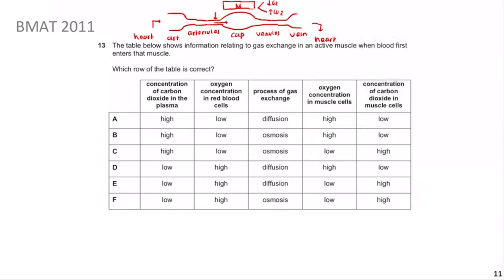To correct my earlier note: carbon dioxide concentration in the plasma should be low since it's fresh blood with CO2 already removed at the lungs. Oxygen concentration in red blood cells is high. The process of gas exchange is diffusion - not osmosis, which is specifically for water. Oxygen concentration in muscle cells is low due to high activity, and carbon dioxide in muscle cells is high. Checking which answer option matches all of these, the answer is E.